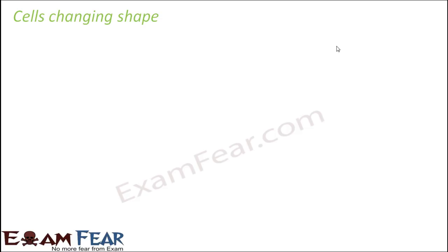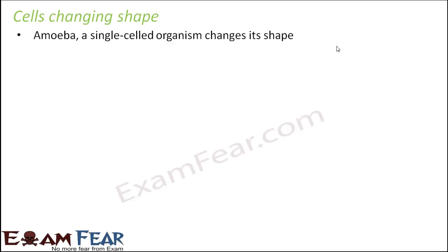Now there are many cells which can change their shape — they do not have a constant shape; their shape keeps on changing. Amoeba is an example of an organism made up of one cell; it is unicellular. This one cell that makes amoeba keeps changing its shape, and that is why we say that amoeba does not have a fixed shape.